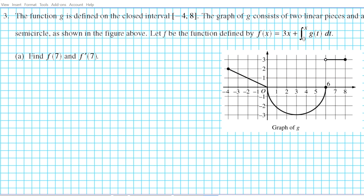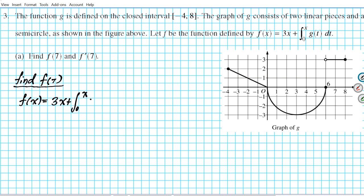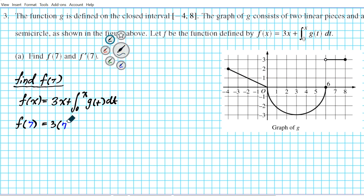Part (a) asks us to find f(7) and f'(7). Let's start with f(7). We need to identify the function: f(x) is 3x plus the integral from 0 to x of G(t) dt. To find f(7), we simply plug in 7 wherever we have x in the function — so 3 times 7 plus the integral from 0 to 7 of G(t) dt.